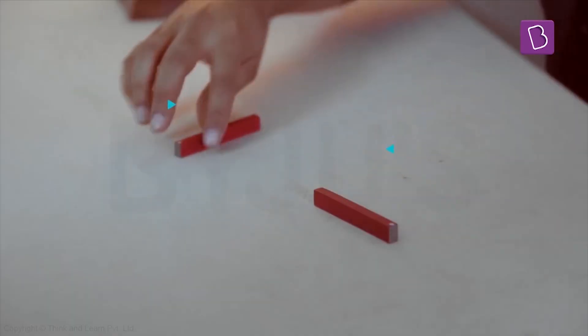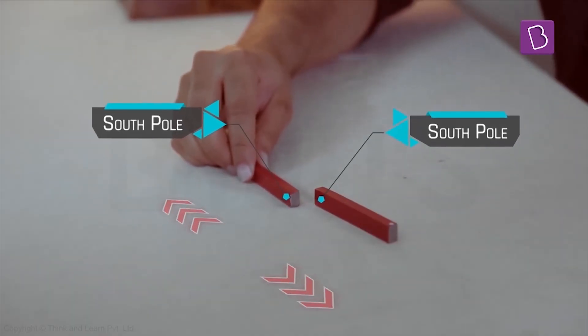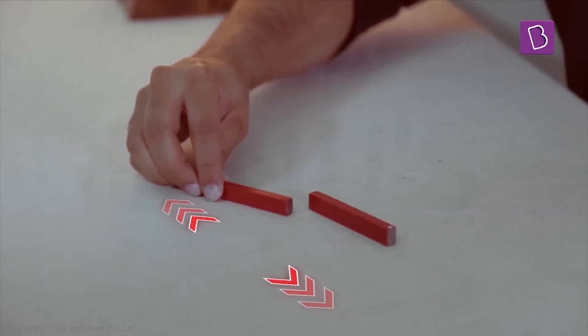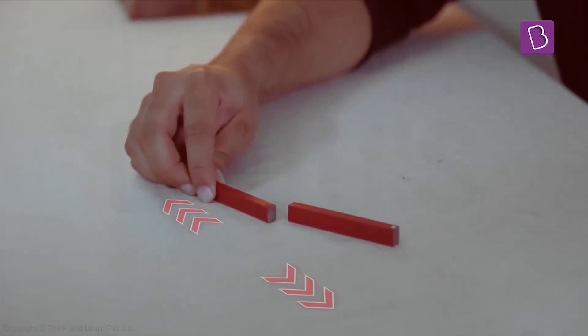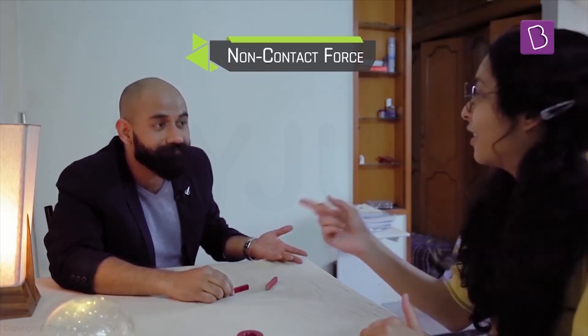Again, if we had two south poles facing each other, they will repel again. And the interesting part is that they do this without any sort of contact or touching, which means they are non-contact forces.